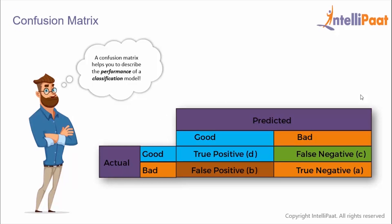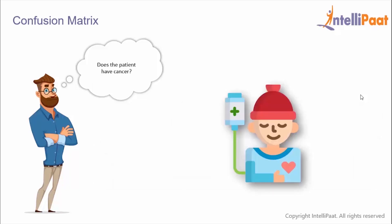Simply put, a confusion matrix helps you describe the performance of a classification model. To get a confusion matrix, all we have to do is create a table of actual values and predicted values. The confusion matrix is quite simple to understand, but the related terminology can be a bit difficult. We have different terms like true positive, false positive, true negative, and false negative.